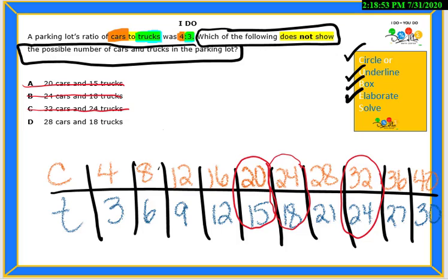D is 28 to 18. If we look at the table, 28 is with 21. So, our answer choice is D because it does not show a possible ratio of cars to trucks.